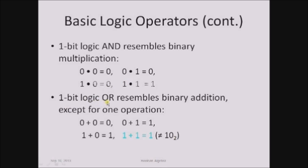Logical OR exactly represents binary addition except one particular combination: 1 plus 1 in binary addition is 2, but in Boolean algebra, 1 plus 1 is 1. Apart from that, 0 OR 0 is 0, 0 OR 1 is 1, 1 OR 0 is 1, and 1 OR 1 is 1. So logic AND represents binary multiplication, and logic OR reflects binary addition except one condition.